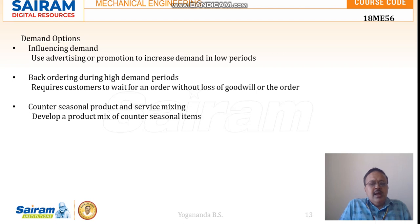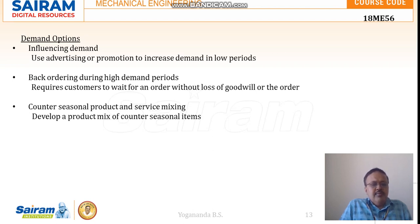We fulfill orders without losing the goodwill of the customer or losing the order. That is why it is advisable to keep an inventory of excess finished product so customers do not wait. Then counter-seasonal product and service mixing — when demand is reduced for the product, we go for a product mix or supplementary service. For example, when demand is reduced for our restaurant service, we add a supplementary service like a bar counter so we do not lose the goodwill of regular customers. That is service mixing.